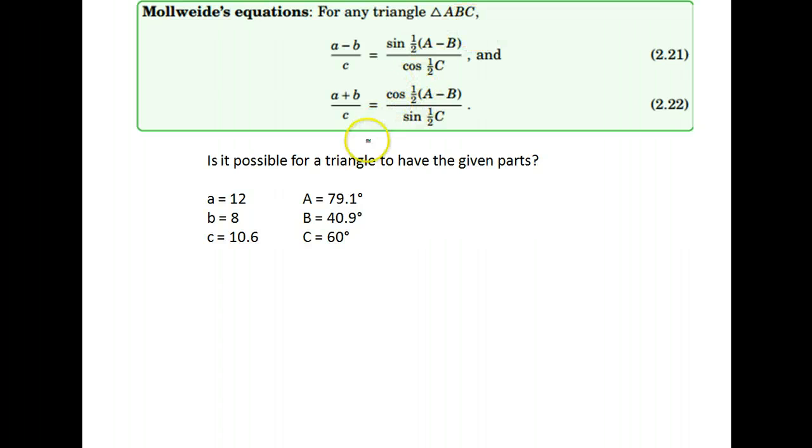In this lesson we're going to talk about how you can determine whether or not it's possible to have a triangle with a given set of data. They will give you all the sides and all the angles and say is it possible for there to be a triangle that exists with these measurements.